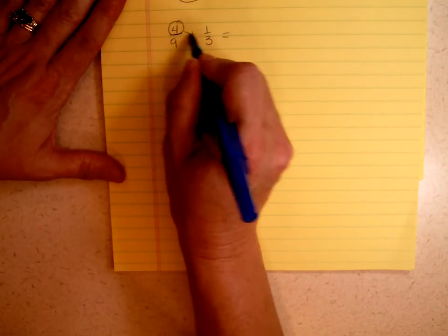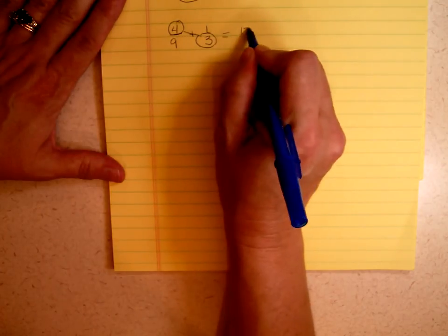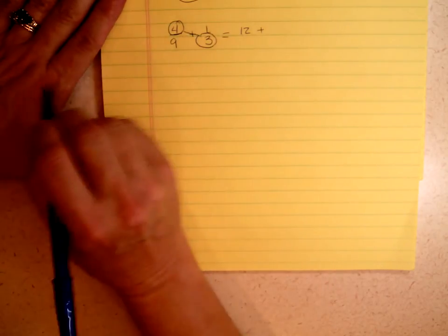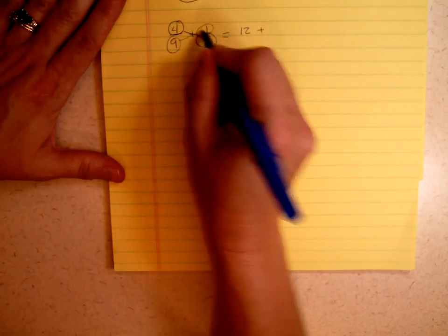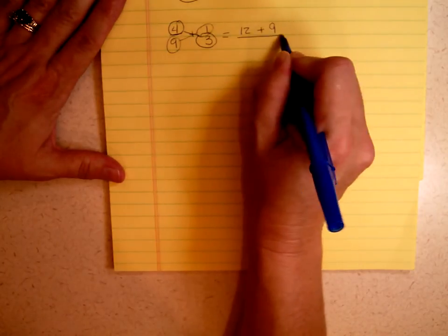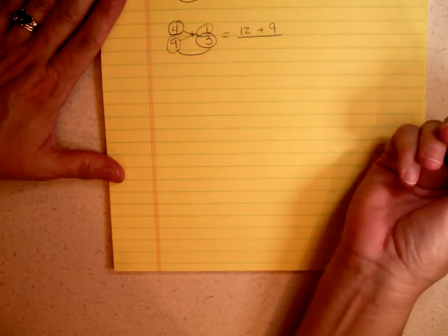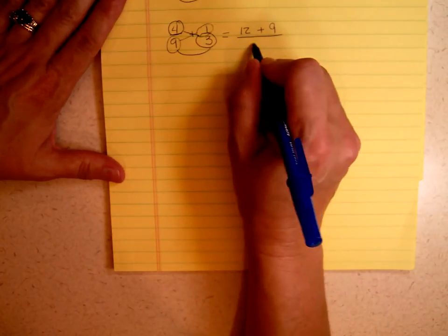Well again, you start with the 4. 4 times 3 is 12. I'm going to put my plus sign. 9 times 1 is 9, divided by 3 times 9, which is 27.